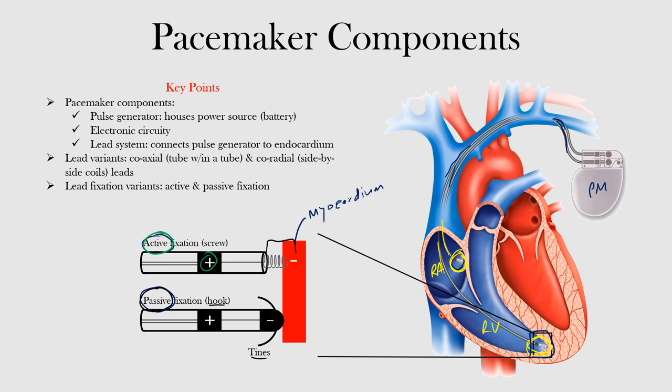Let's review what we discussed. The basic pacemaker components include the pulse generator, which houses the power source — the battery — the electronic circuitry, and different software and algorithms that each pacemaker may have. There is also the lead system that connects the pulse generator to the endocardium.